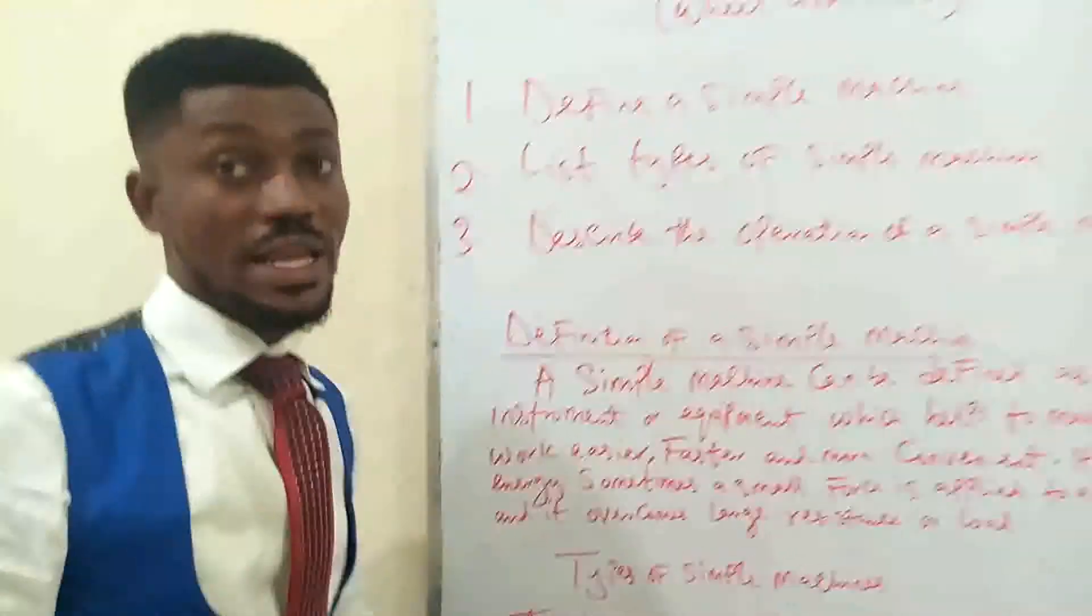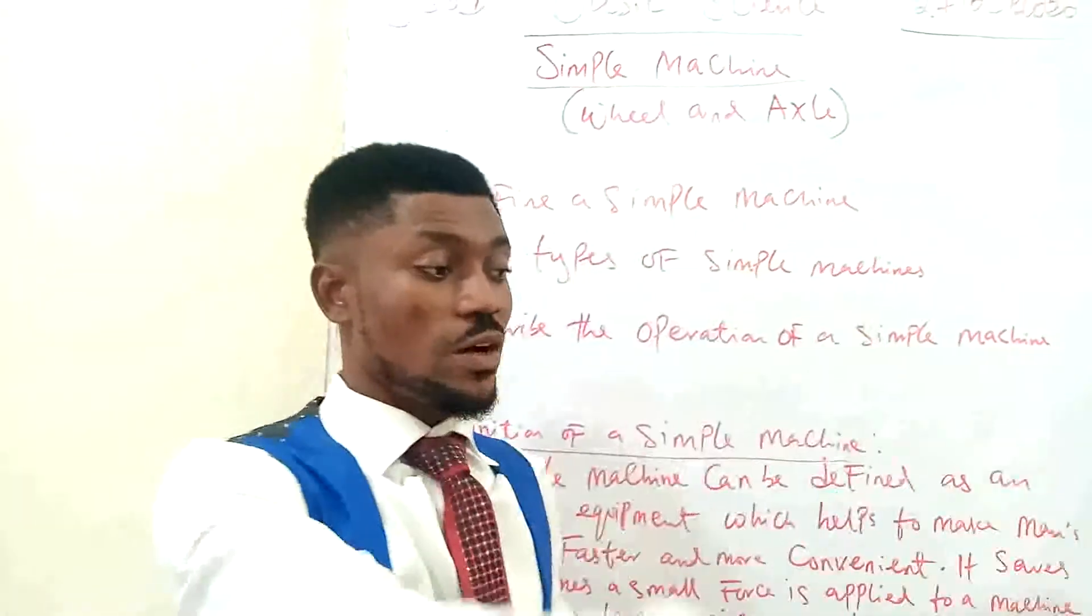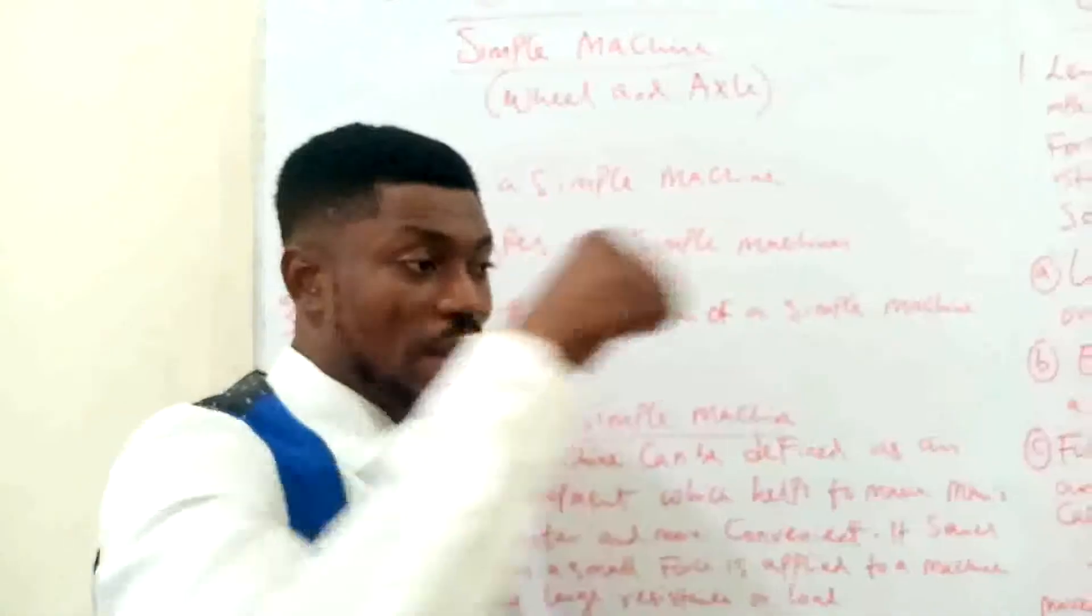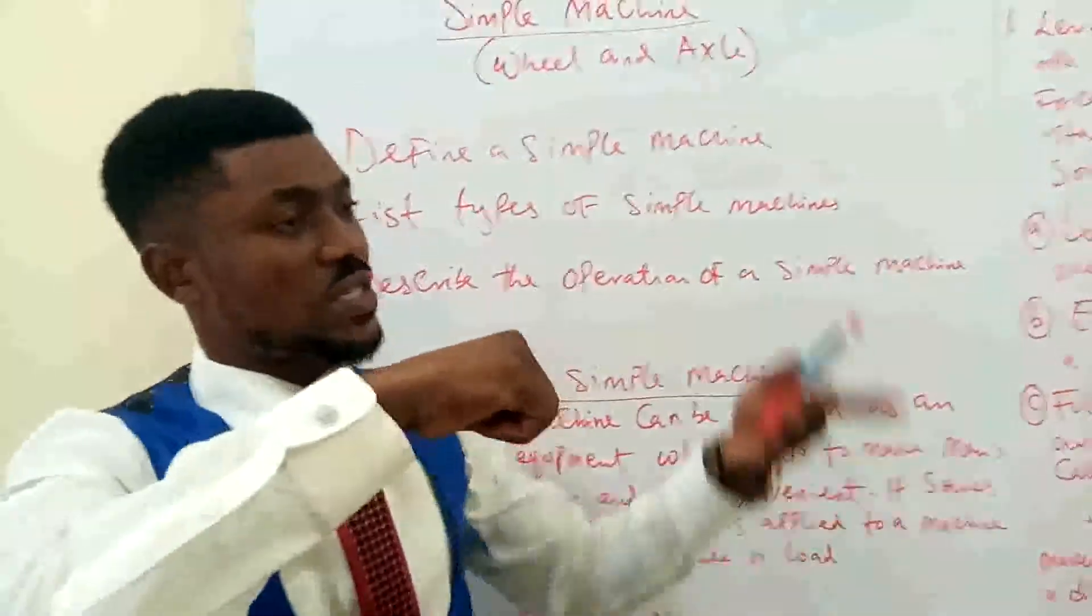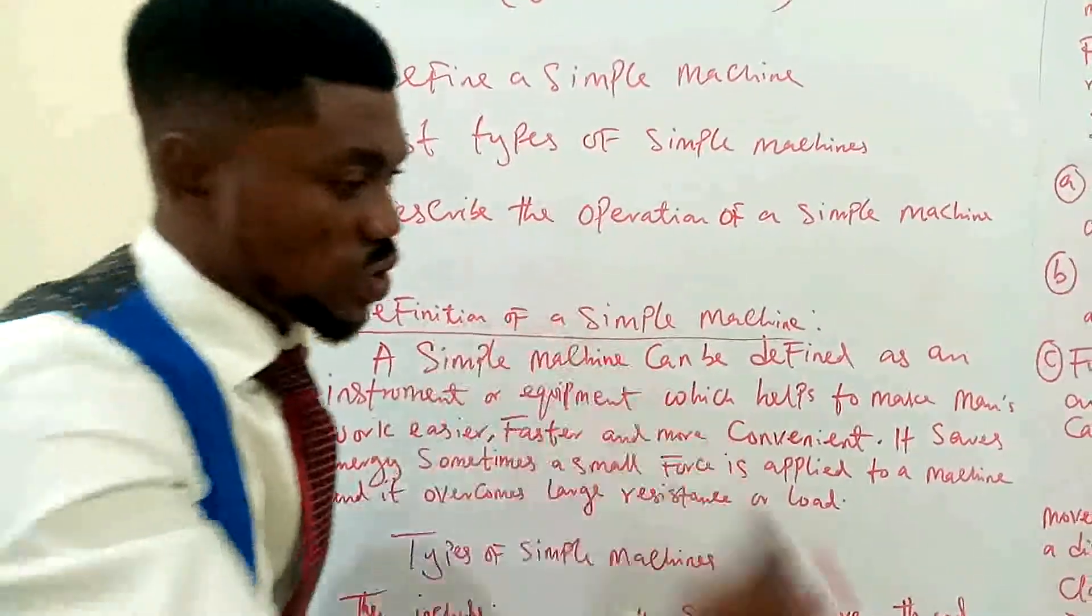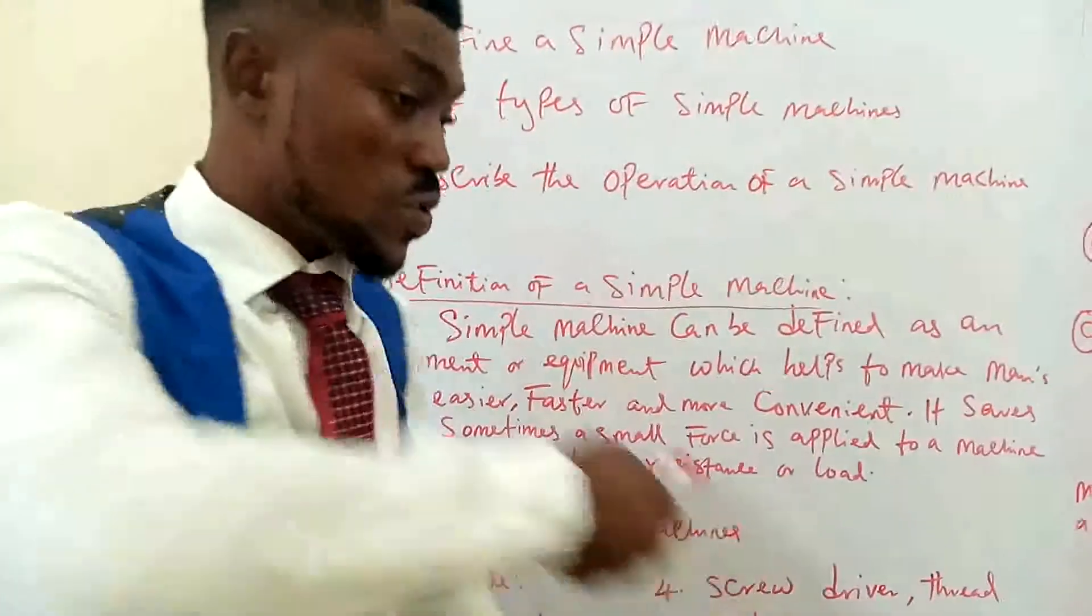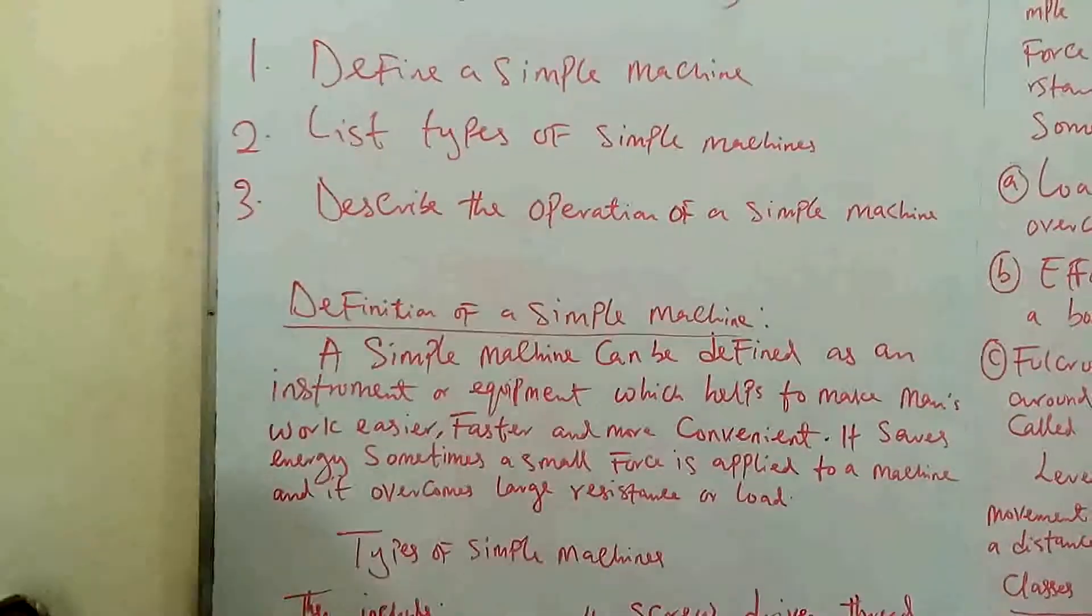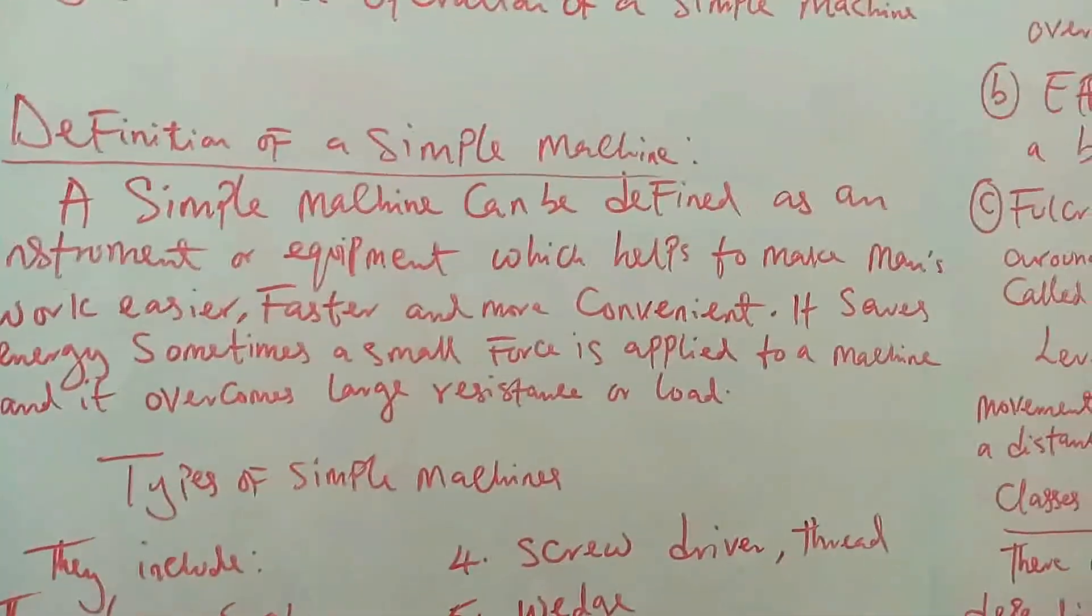A small force is applied to a machine, and it overcomes a large resistance or load. When a small force is applied, like the illustration I gave you earlier about using that simple machine to get water from your well, a small force is applied. You are just wheeling it, and then it is overcoming a greater load for you, a large load of resistance. Unlike if you have to use your hand to drag the rope up and down to get the water from the well. So, it is easier to use that simple machine.